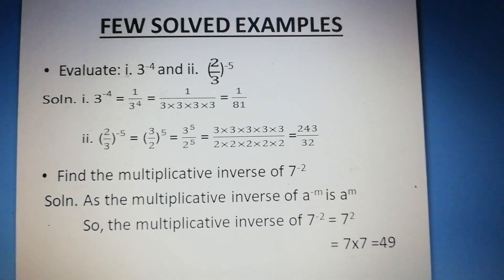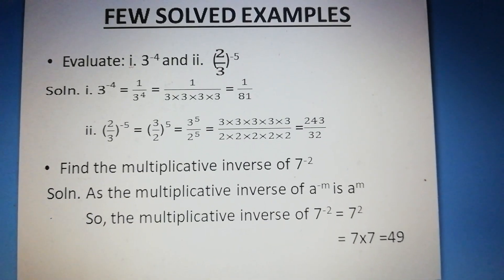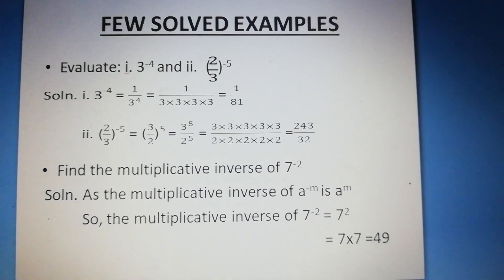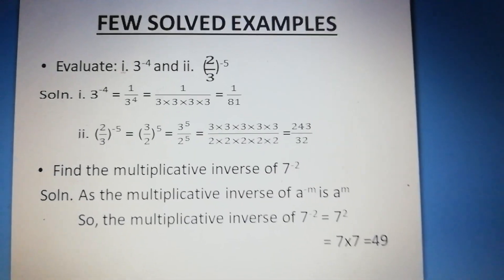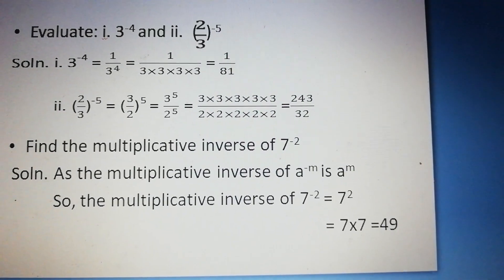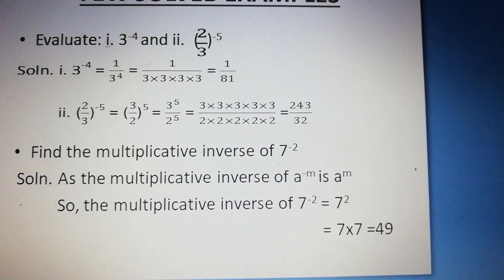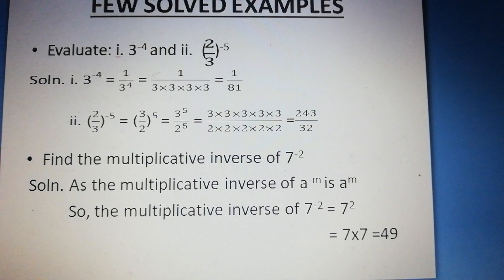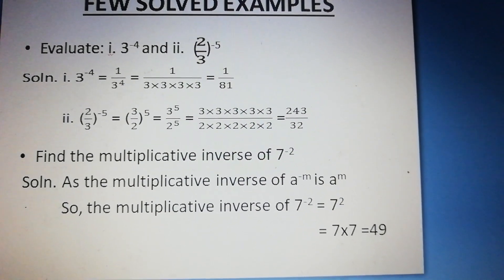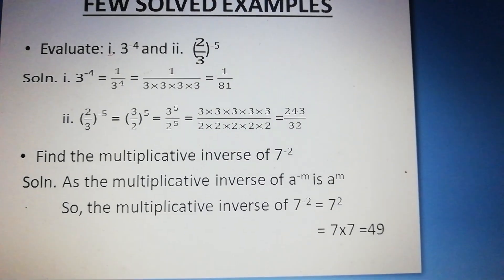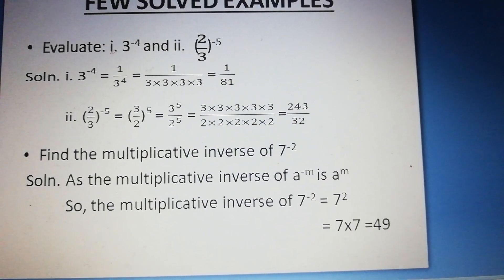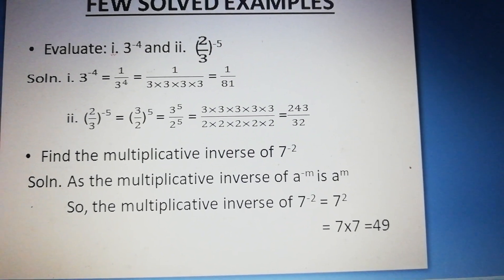Now a few solved examples are shown for you. Number 1 — evaluate 3 to the power minus 4. So 3 to the power minus 4 can be written as 1 by 3 to the power 4, which is equal to 1 by 81. Next, 2 by 3 whole to the power minus 5, which we can write as 3 by 2 whole to the power 5, and after solving we get 243 by 32.